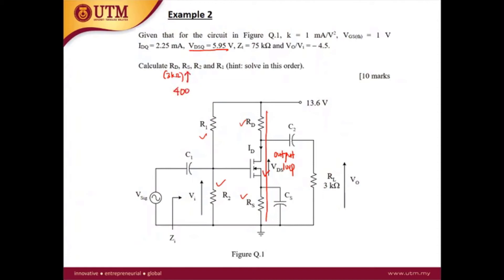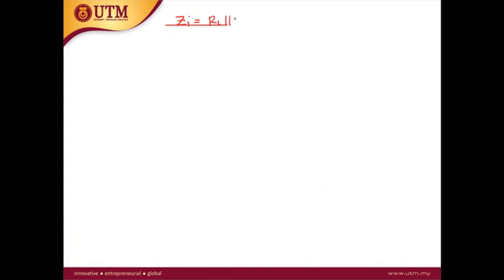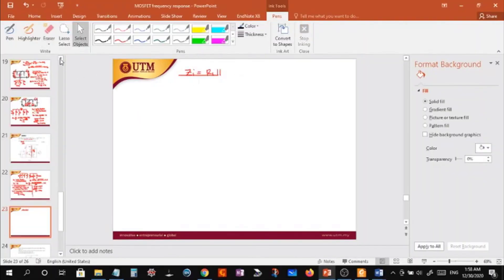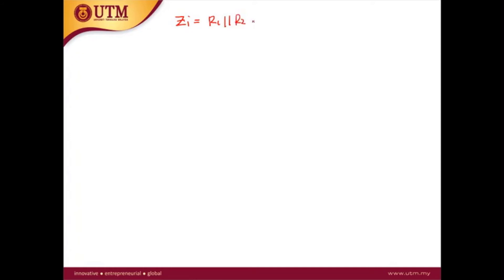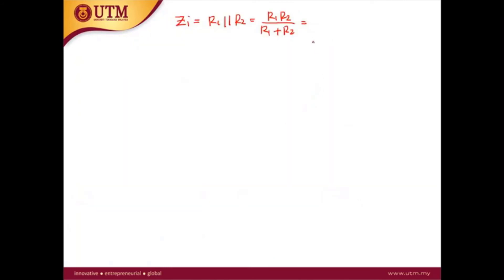RS is 400 ohms. Next, we solve for R1 and R2. The given information is Zi equals 75 kilohms. For a common source with bypass capacitor, Zi equals R1 parallel with R2, which is R1*R2 over R1 plus R2, given as 75 kilohms. This is the first equation.